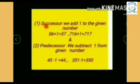To get successor, we have to add 1 to the given number. For example, 56 plus 1 equals 57. So 57 is the successor of 56. 716 plus 1 equals 717. 717 is the successor of 716.